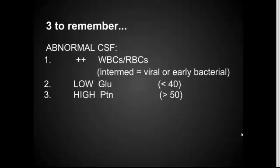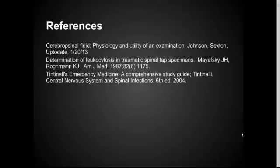Three things to remember when looking at CSF: Any white blood cell or red blood cell count in your CSF is abnormal. If you have intermediate results, look at the ratios and consider early bacterial or viral infection. A low glucose — less than 40 — is abnormal, and an elevated protein — greater than 50 — is abnormal. Thanks for joining us today on EM in 5.